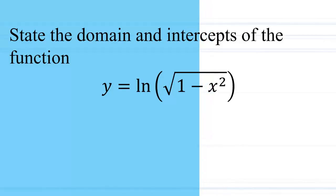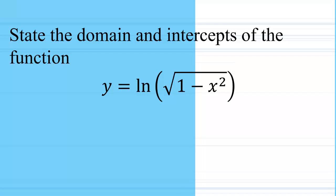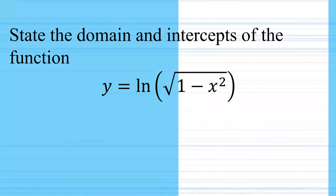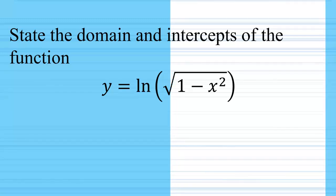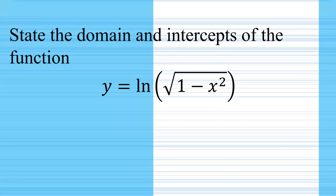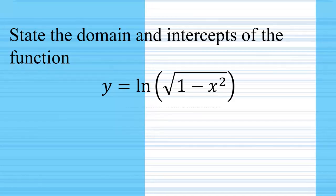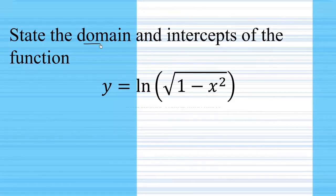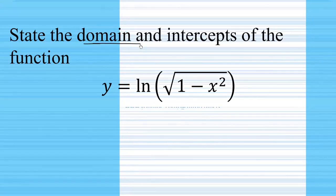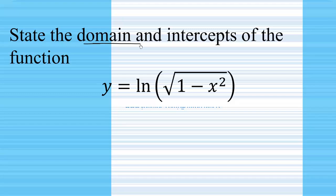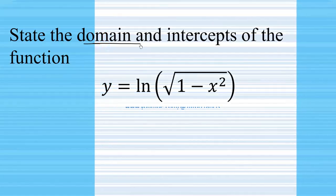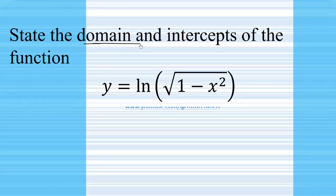We have this function: the natural logarithm of the square root of 1 minus x squared. It's a natural logarithm function with the square root function in the argument. Let's see how we calculate the domain and the intercepts of this function, ln of the square root of 1 minus x squared.